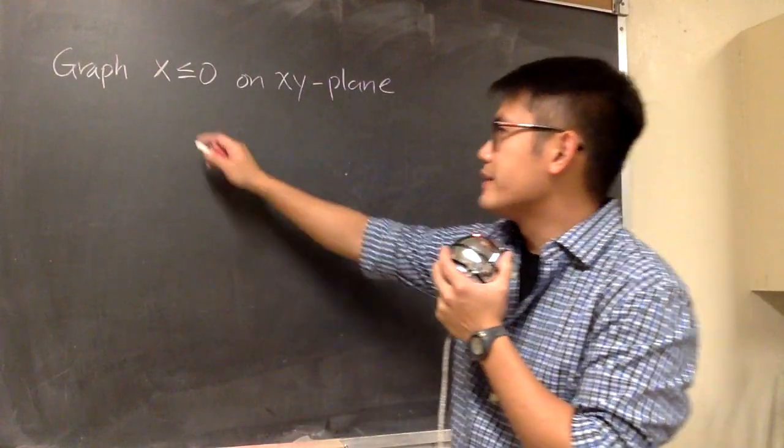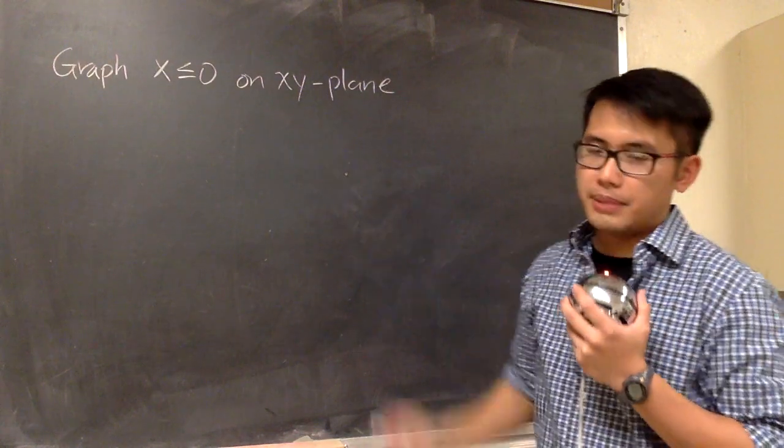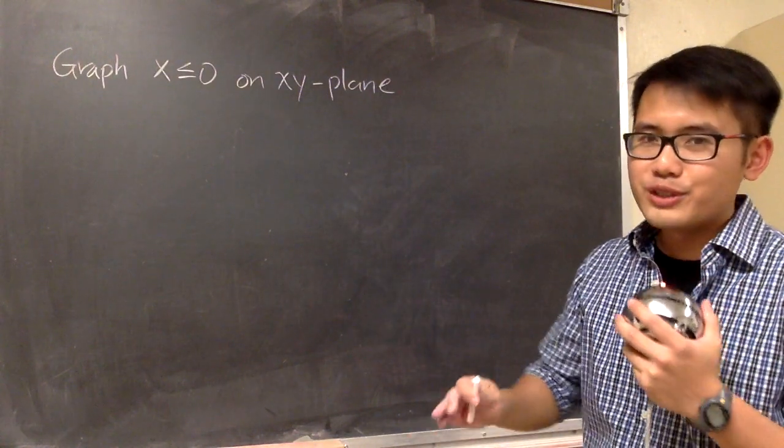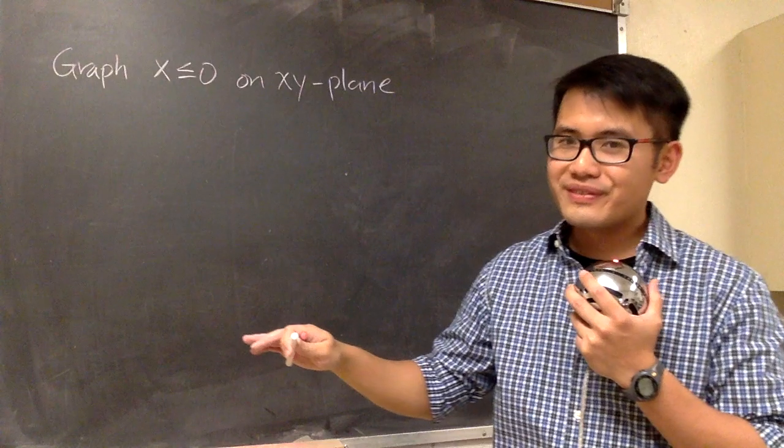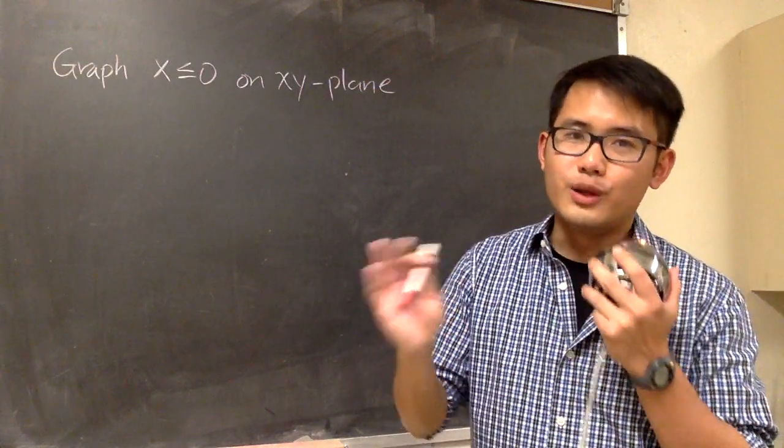Okay, let's see how to graph the inequality x is less than or equal to 0 on the x-y plane. This is not just going to be a number line graph, we are going to do this on the x-y plane. So the answer is going to be a region.